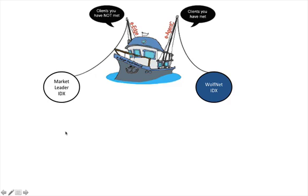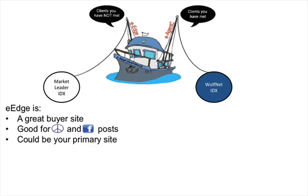Those are the two big broad differences. eEdge is great for buyer sites, great for Craigslist and Facebook postings. eAgency is typically the primary site. However, you could go in and create subdivision niche sites, foreclosure sites, short sale sites, recruiting sites — pretty much anything. And I'm going to show you some samples of those in just a second. But there is a third website, and that is the white pages.